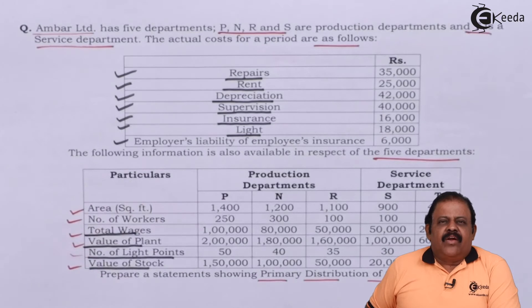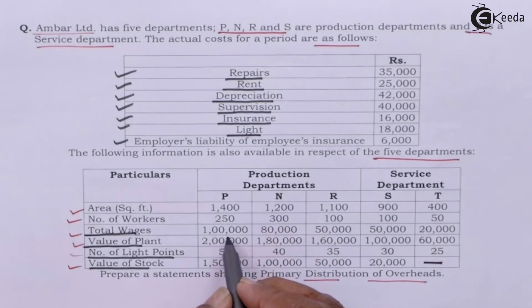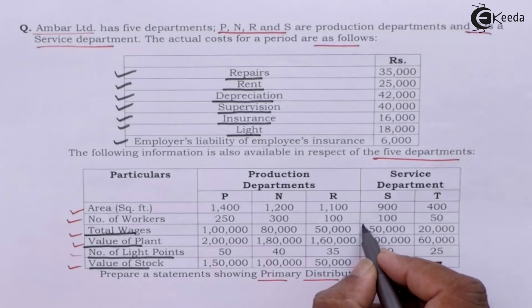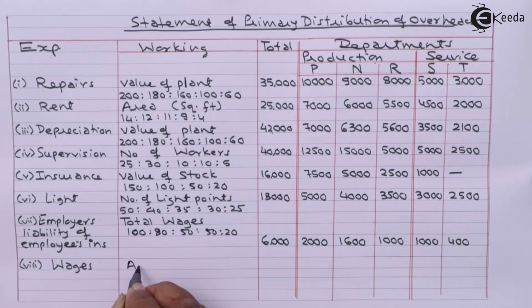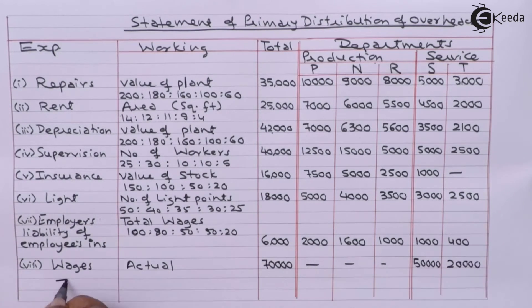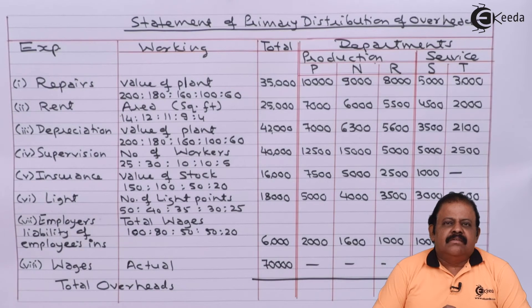We have allocated all expenses. Now in the case of total wages, production departments' wages we are required to ignore, but total wages of service departments shall be considered as overhead. We have divided all overheads. Let us take column totals.